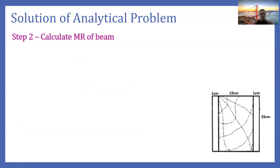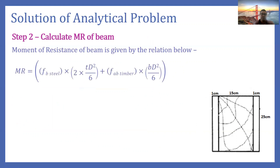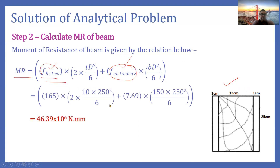Now we calculate the moment of resistance using the formula derived in the previous part. In the formula we put the bending stress value of steel for the steel term, and for the timber term we use the actual bending stress fab calculated in the previous step. Substituting all values, the moment of resistance is 46.39 × 10⁶ newton·mm, which converts to 46.39 kilonewton·meter.